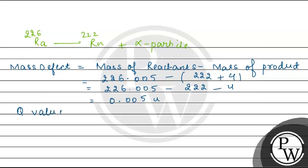The Q-value, which is the corresponding energy, is mass defect × c² = 0.005 × 931 MeV = 4.655 MeV.